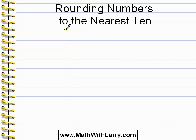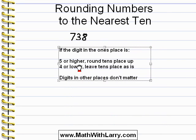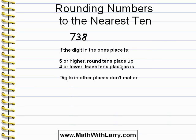Now, here's how this works. I'm going to write the number 738. We know from previous lessons that the 8 is in the ones place, the 3 is in the tens place, and the 7 is in the hundreds place. Here's the rule that we follow: to round to the nearest 10, if the digit in the ones place is 5 or higher, you round the tens place up. If it's 4 or lower, you leave the tens place as is. The digits in the other places don't matter at all.